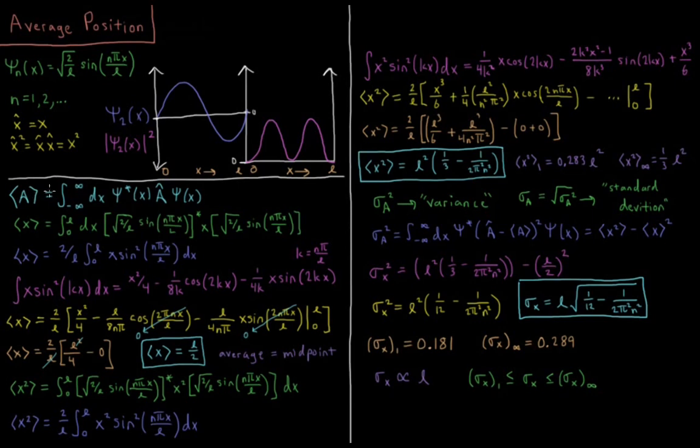Let's compute the average value of x. So to calculate the average value of a property, we integrate from minus infinity to infinity dx psi star complex conjugate of psi(x), times the operator acting on psi(x). This curly bracket of x is what we would call the expectation value, or the average value of x.